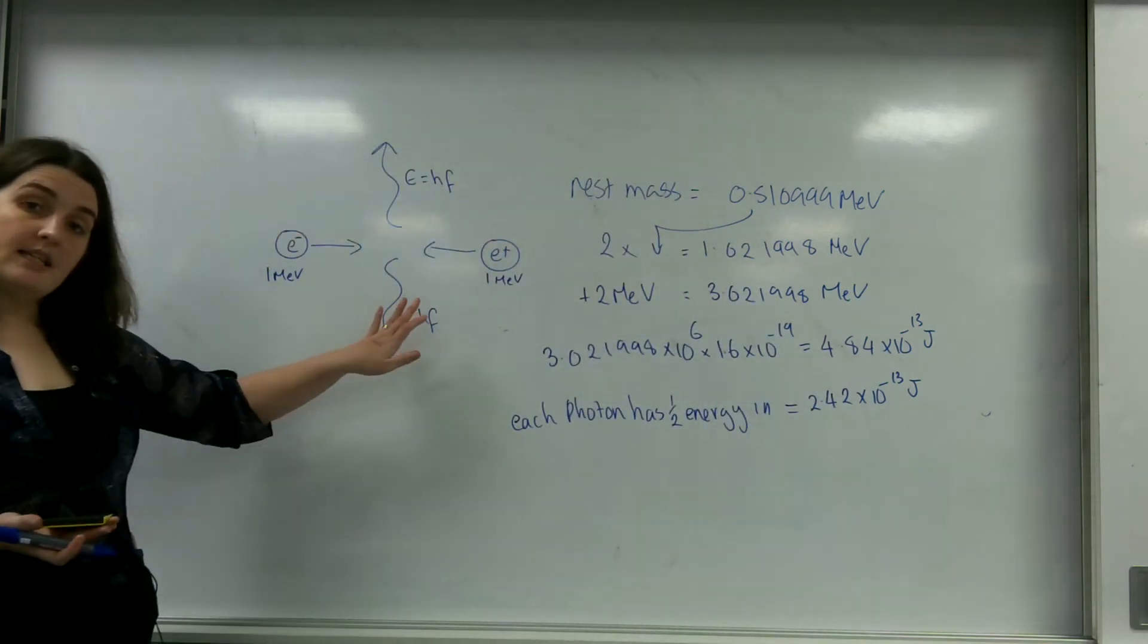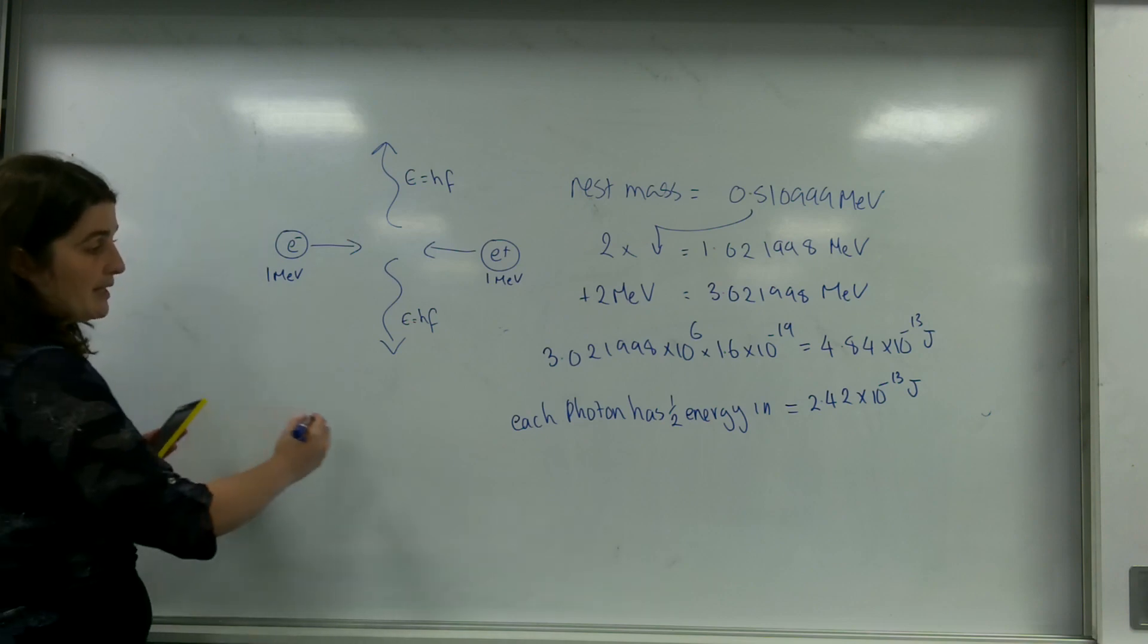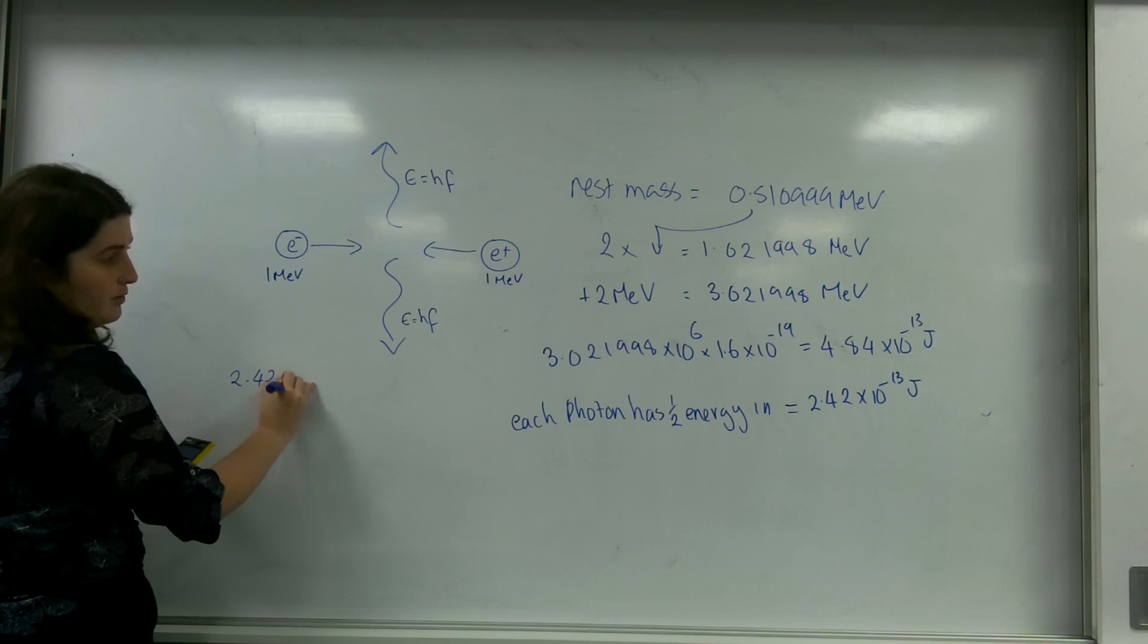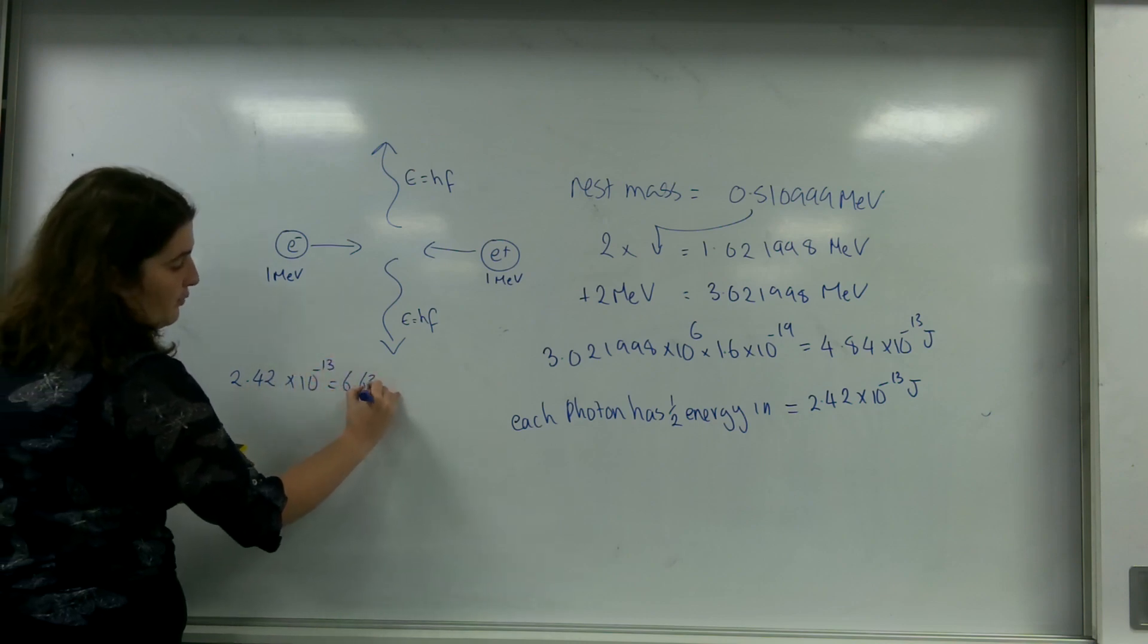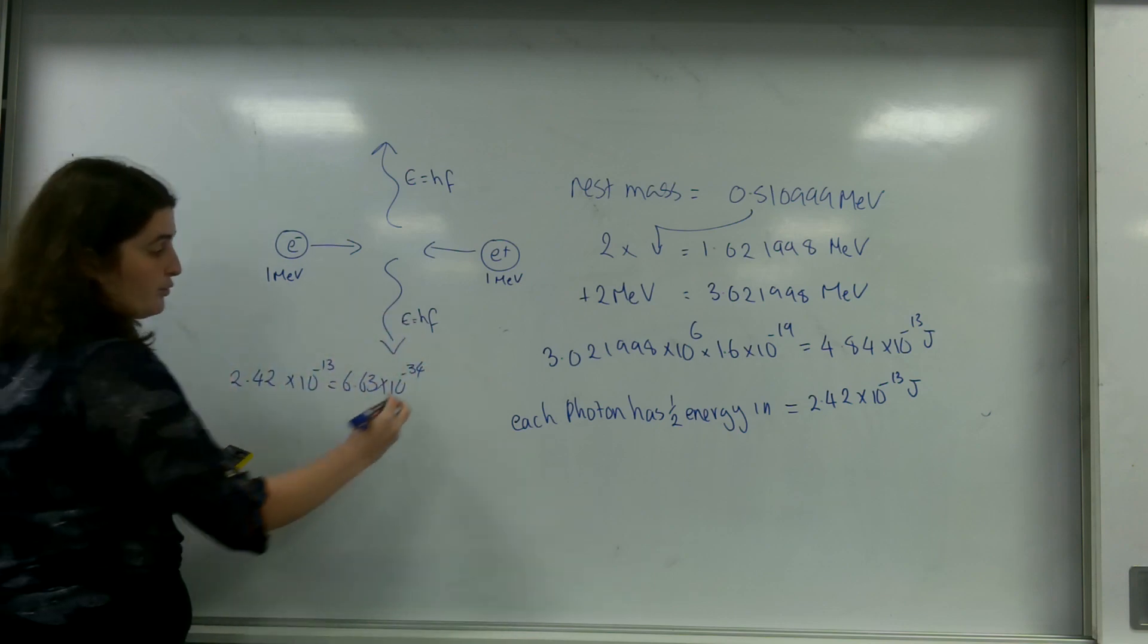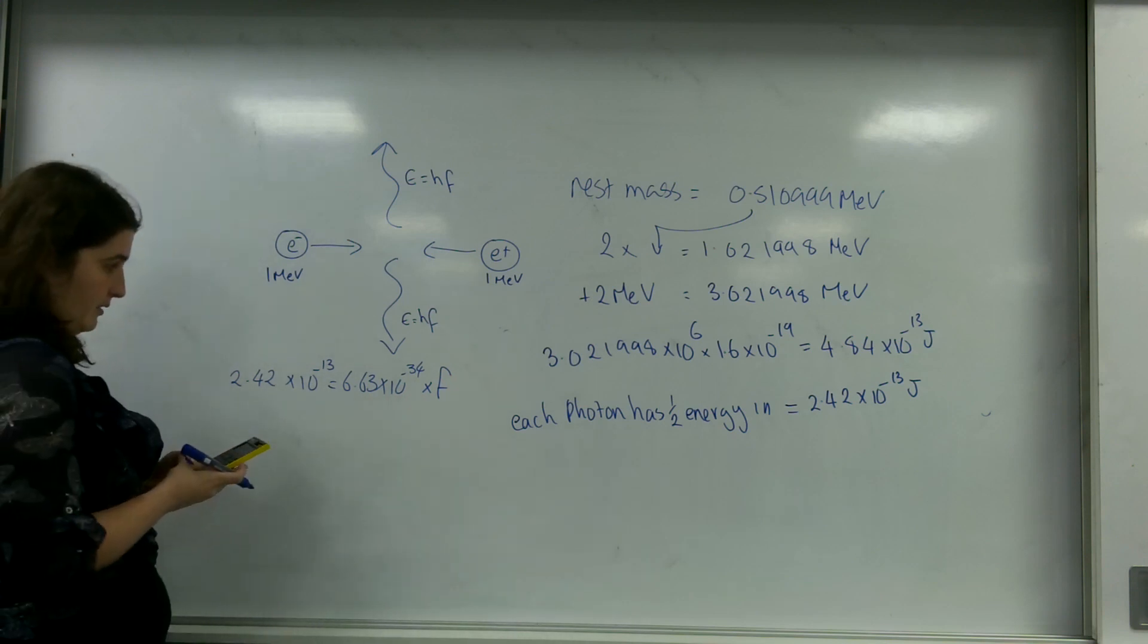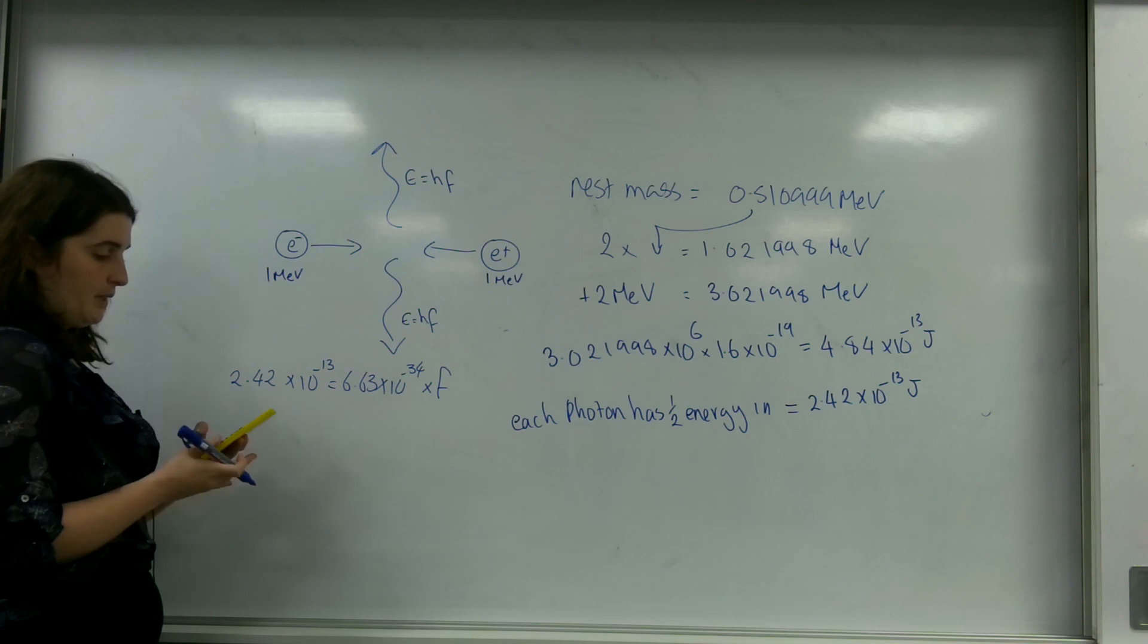So I can then use this formula here to work out the frequency of the photon emitted. So 2.42 times 10 to the minus 13 equals 6.63 times 10 to the minus 34, that's Planck's constant. So this one divided by this one would get me my frequency.